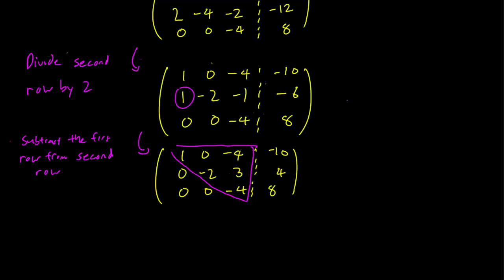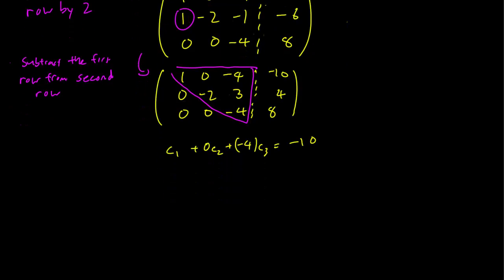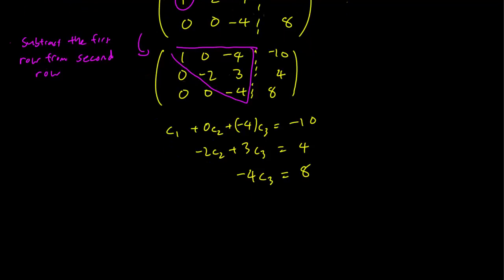So what remains is to figure out what our c1 and c2 and c3 are. So we can write this down. This is 1c1 plus 0c2 plus minus 4c3 equals minus 10. And we have minus 2c2 plus 3c3 equals 4. And minus 4c3 equals 8. And back substitution becomes easy.